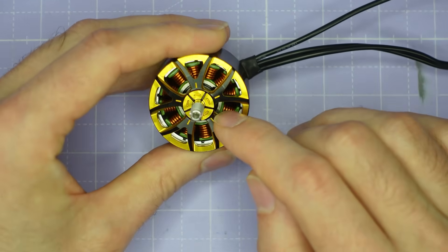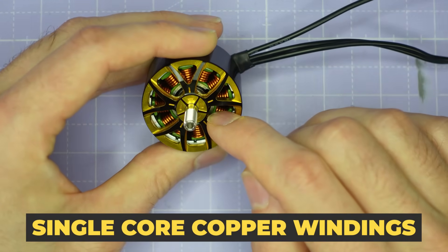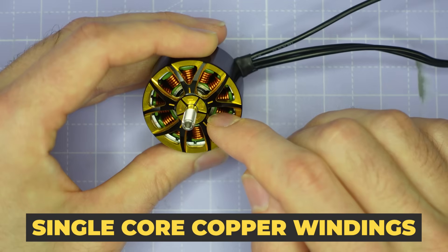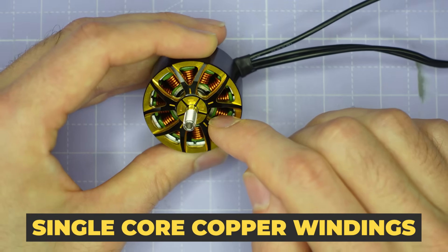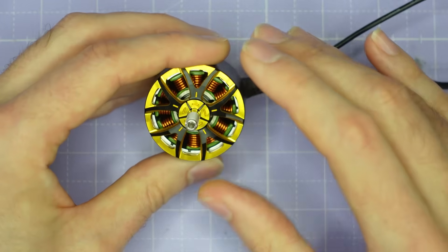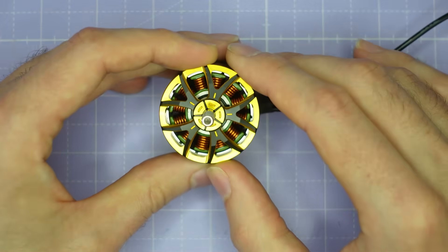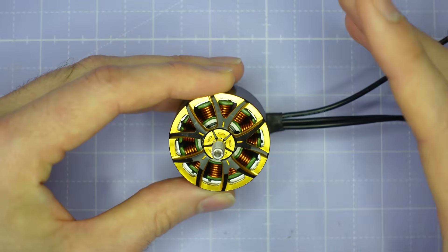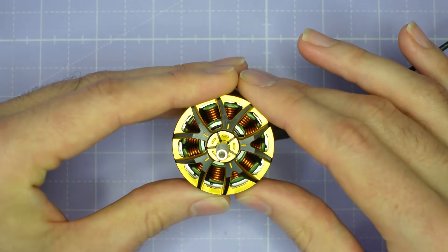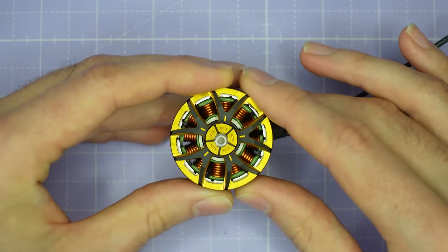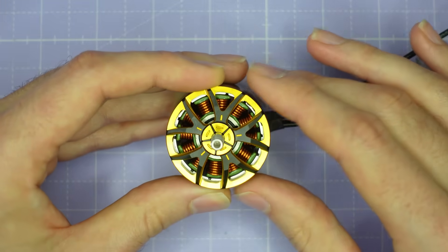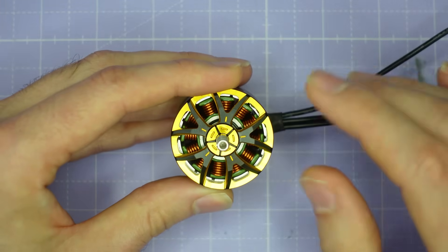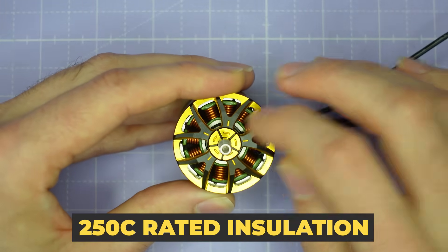The windings are thick single core copper windings with 250 degrees C rated insulation on them and they are designed to be incredibly robust so even if you're putting enormous amounts of power into this motor for example because you're a certain South African friend of mine trying to break a world drone speed record the motor is designed to withstand that abuse without smoking because of that very very high temperature insulation.